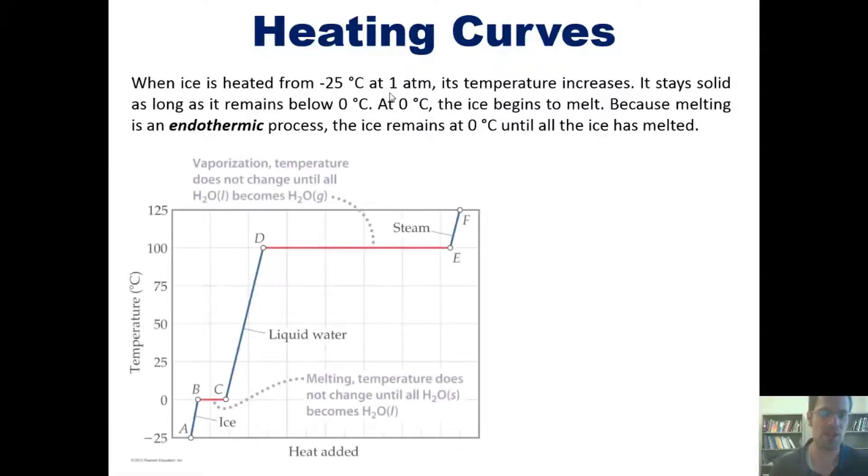You can see that shown in this diagram, which is called a heat curve. Once again, we're starting our ice at negative 25. Its temperature gradually raises, but this whole time it stays solid.